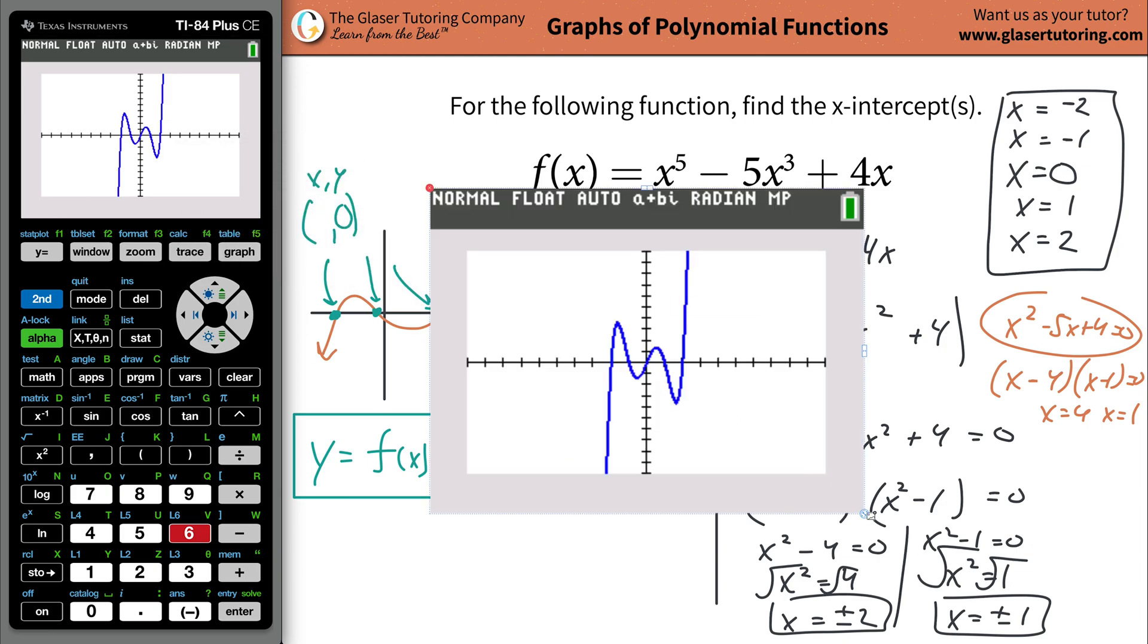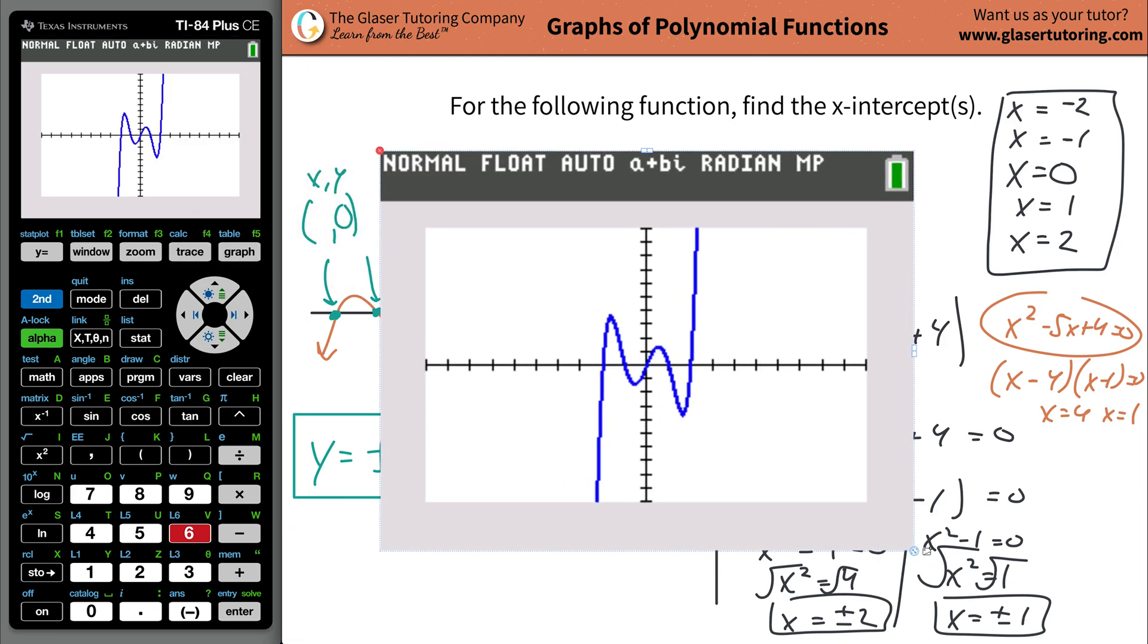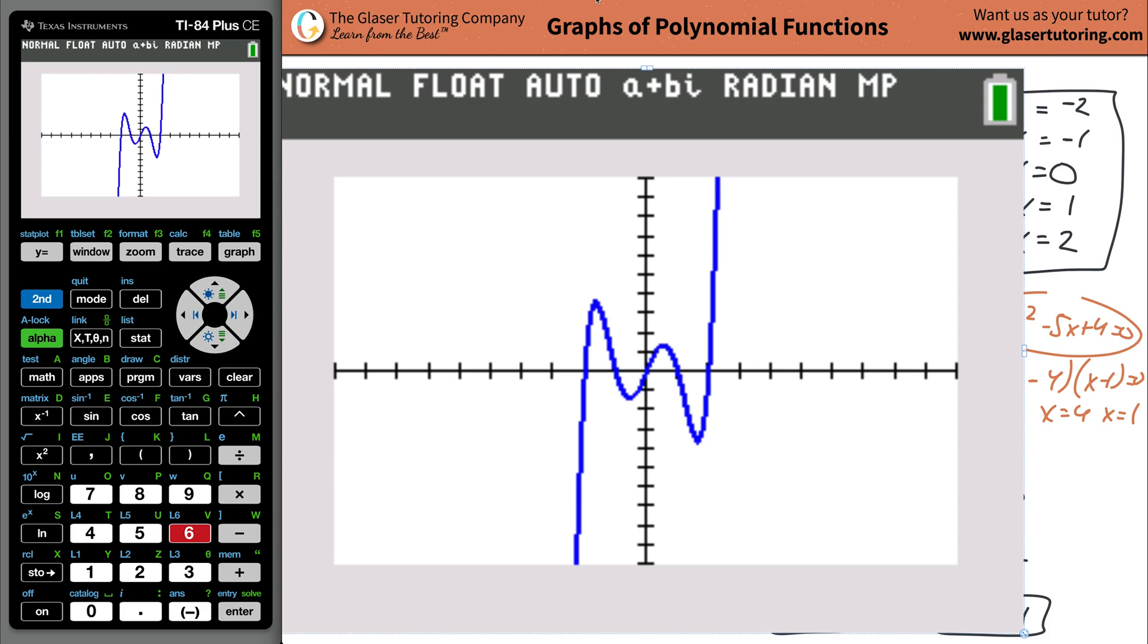And here is now the function. So take a look. Let's increase the size. And here we go. So where does the function cross the x axis looks like it crosses it here, here, here, here, and here five times: negative two, negative one, zero, one and two. And that's exactly what we said it should be.